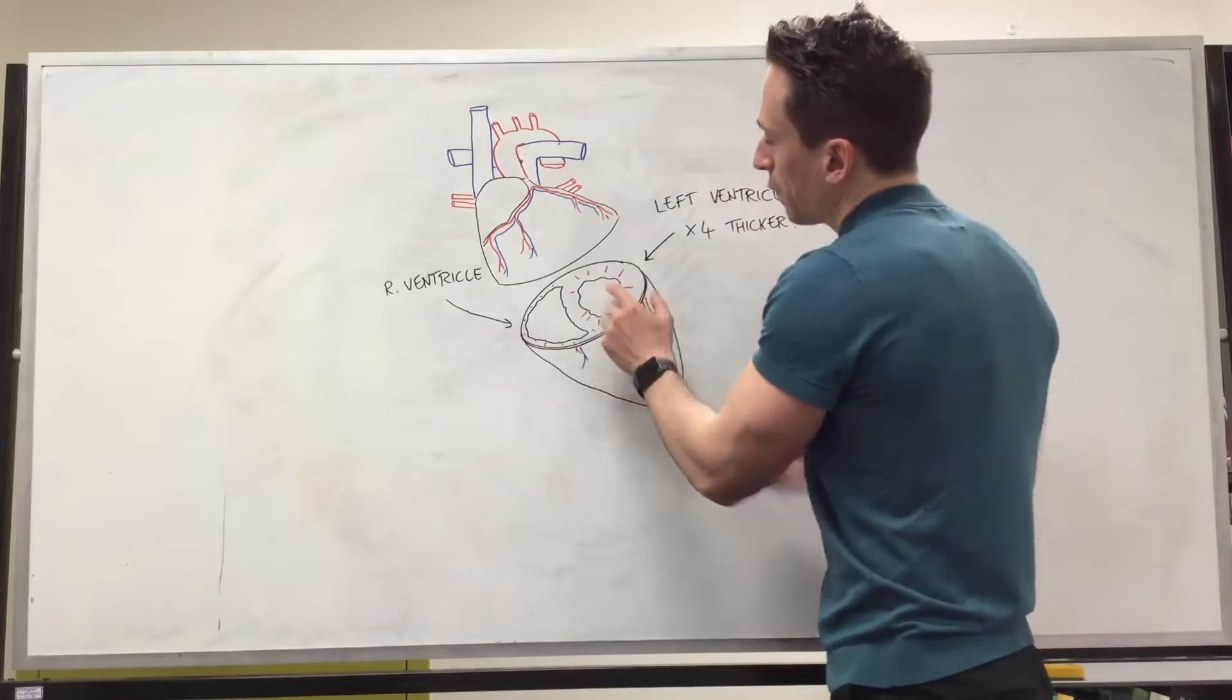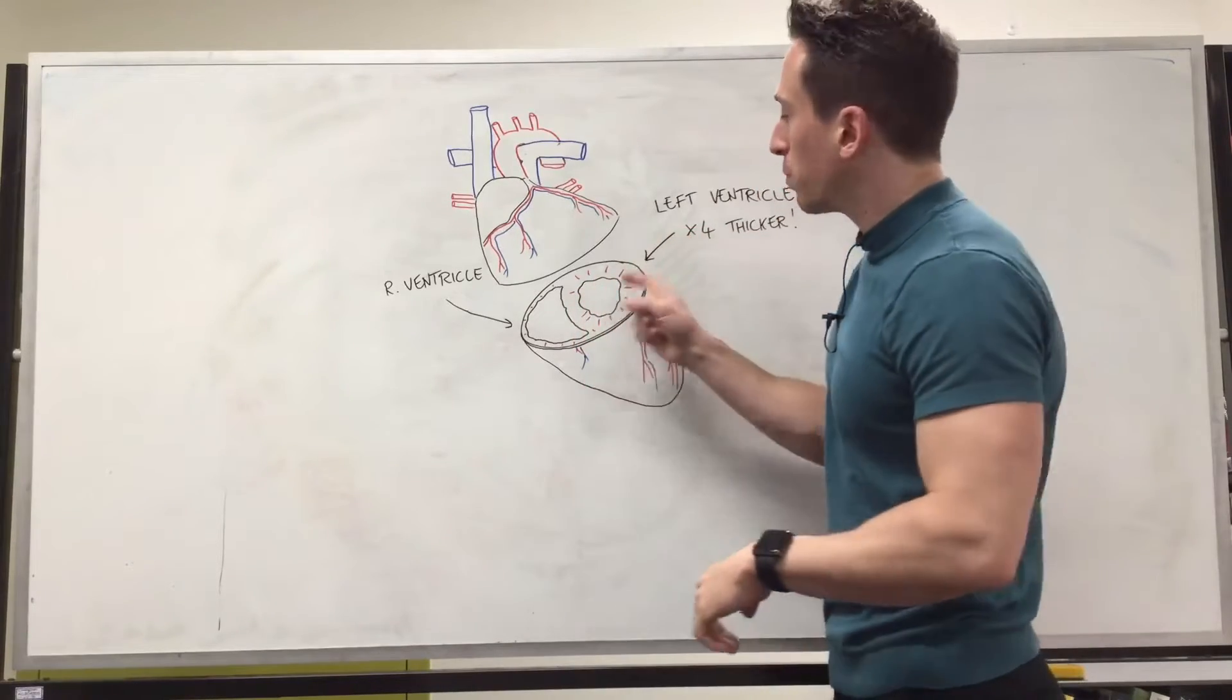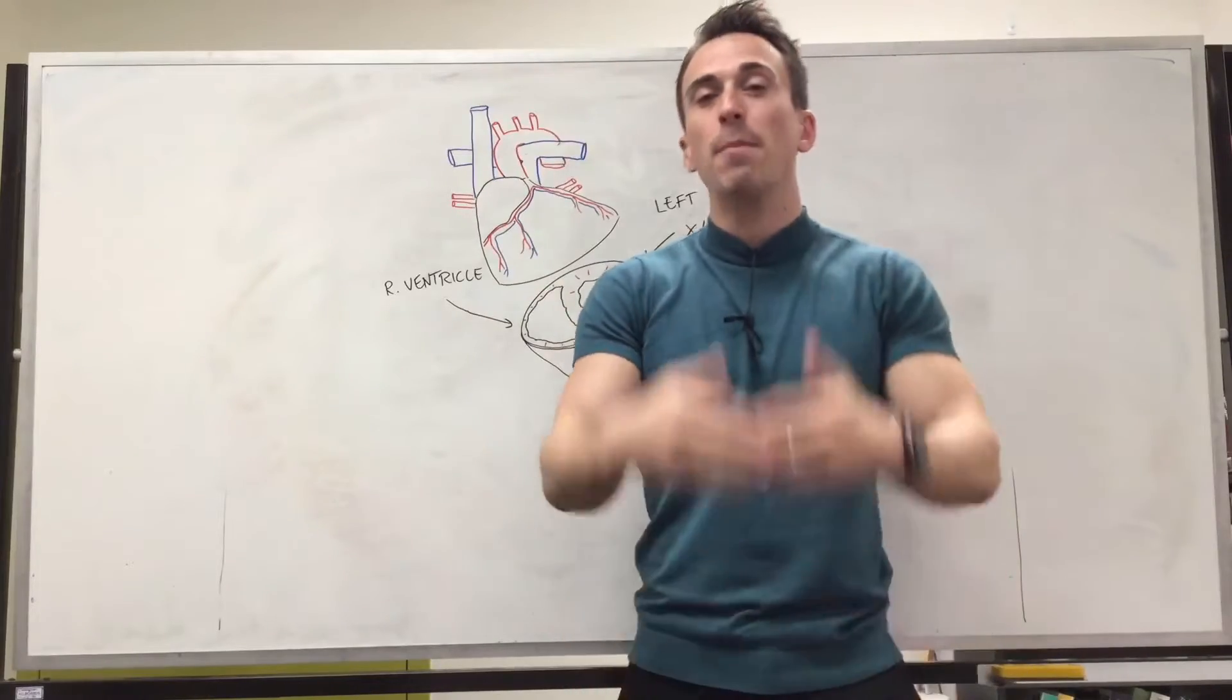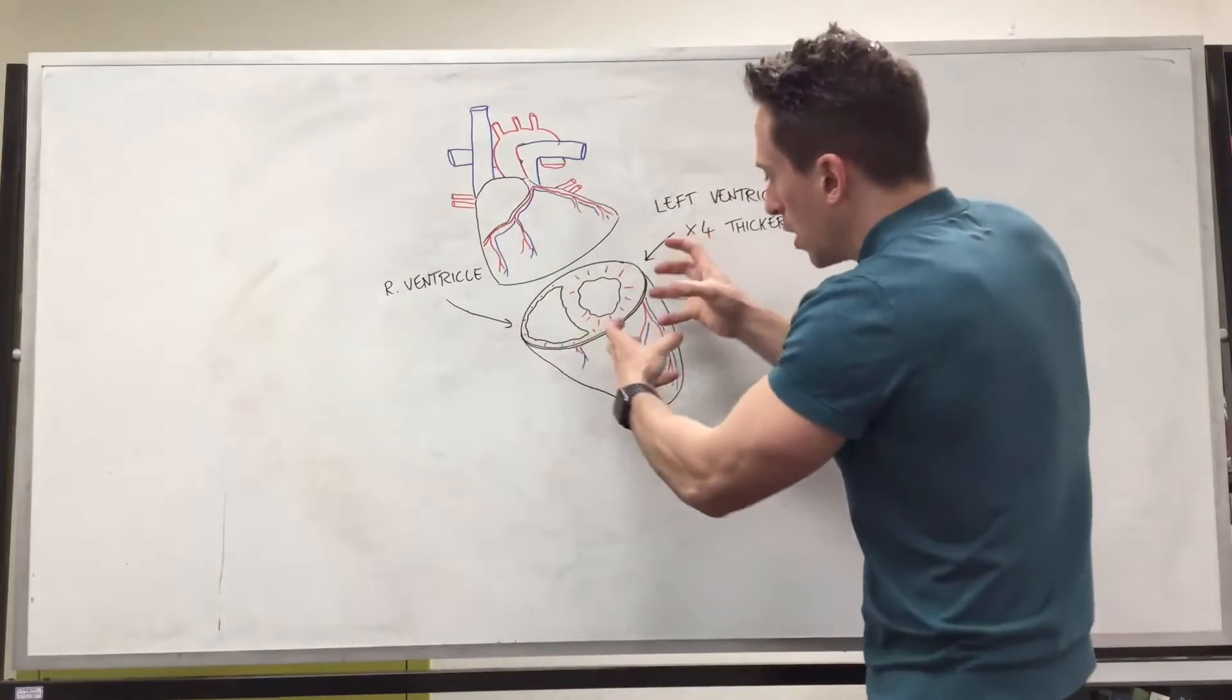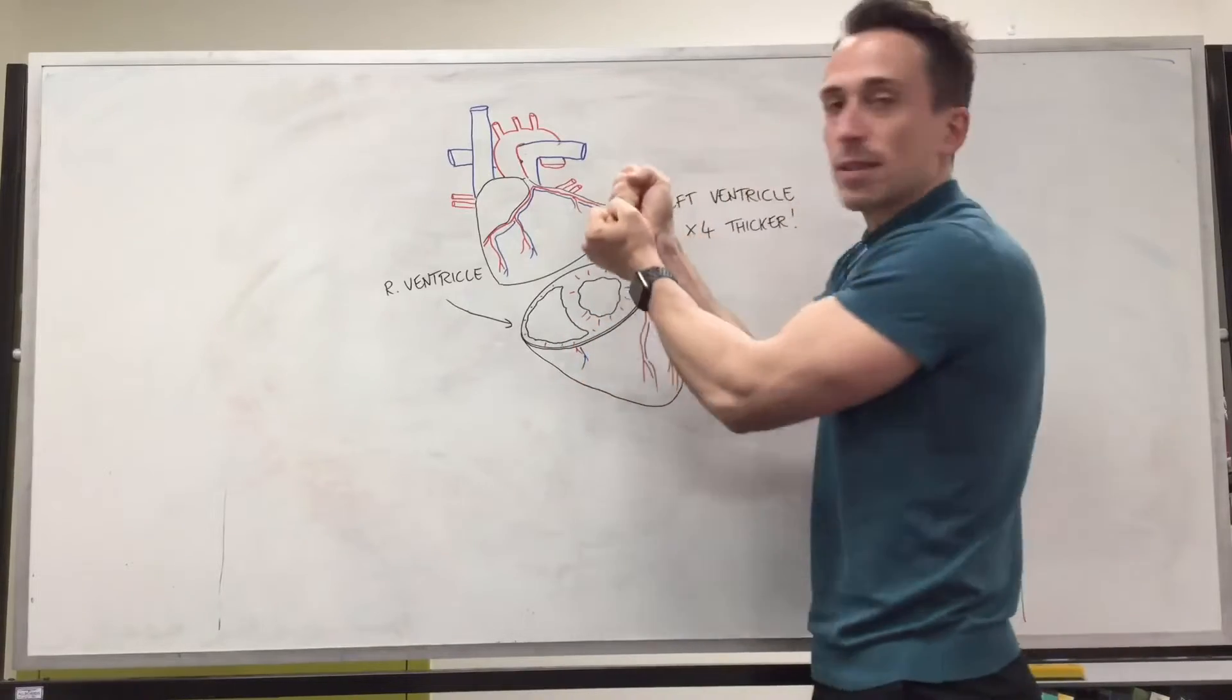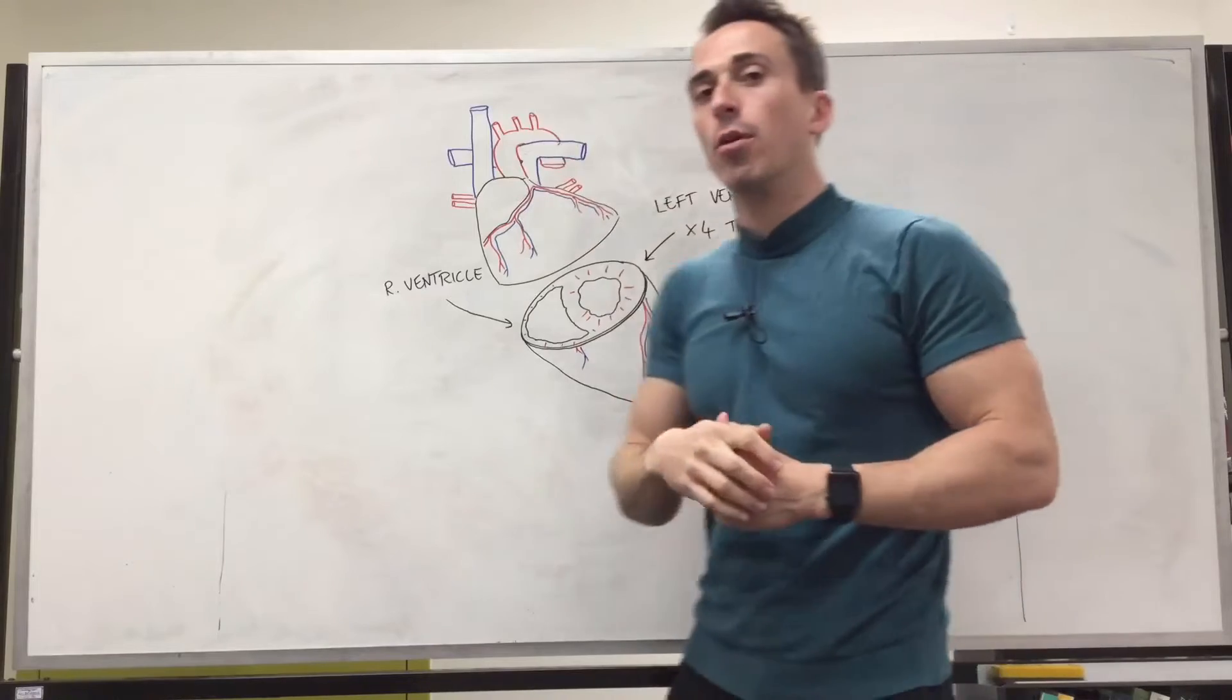But when that left ventricle or myocardium of the left ventricle contracts, it needs to push blood out to the entire body. That's the top of the head to the tip of the toes. And that means it requires a lot of pressure, and that's a lot of force. And in order to do that, we need a lot of muscle. And that muscle contracts, it squeezes like a tube of toothpaste. It actually begins at the bottom and squeezes upwards, and then it squirts that blood out via the aorta to the entire body.